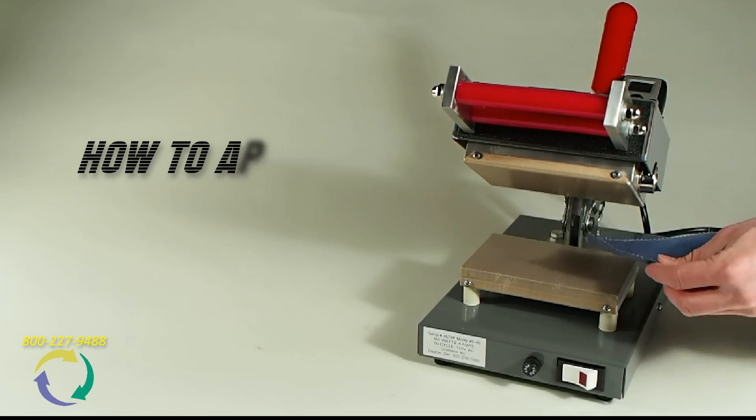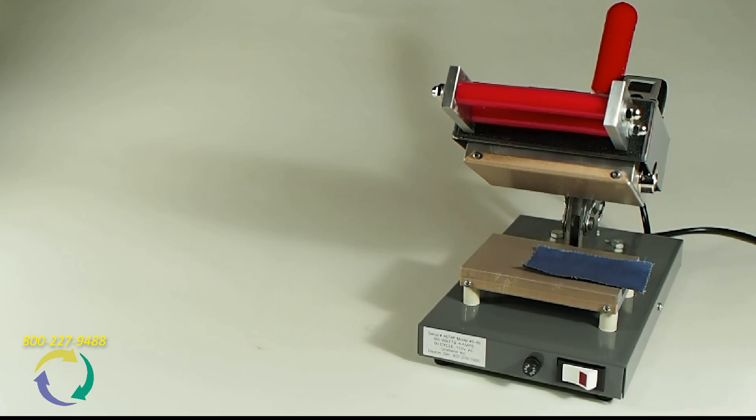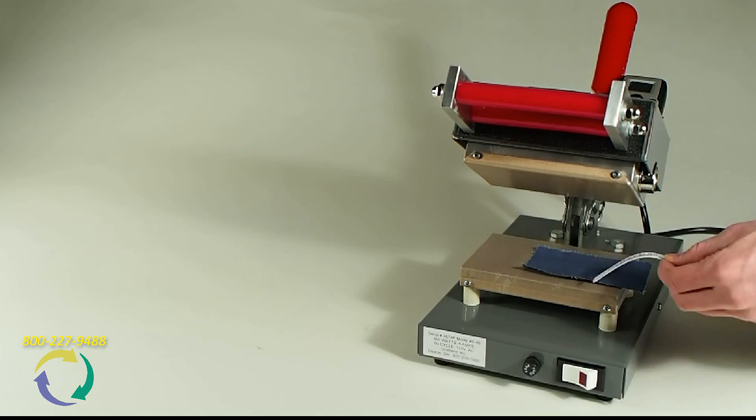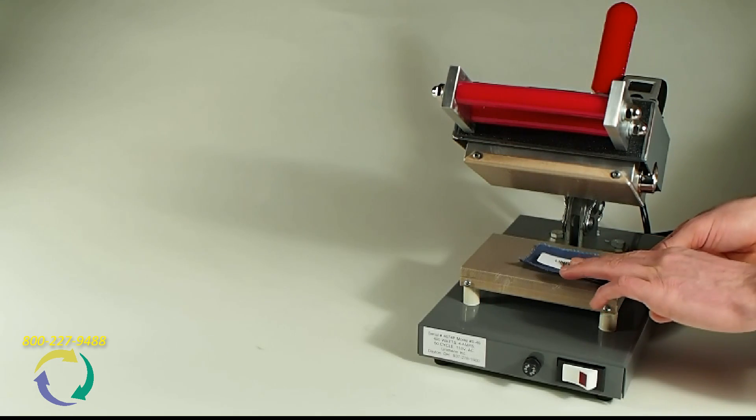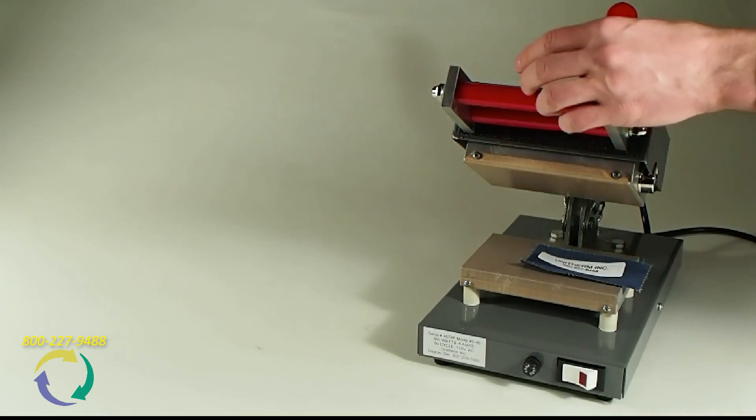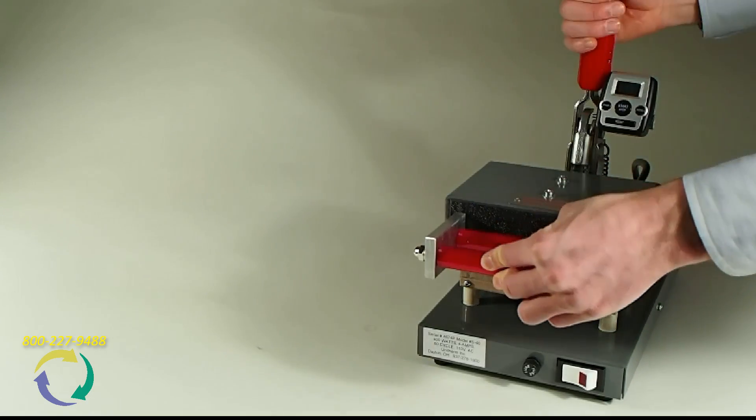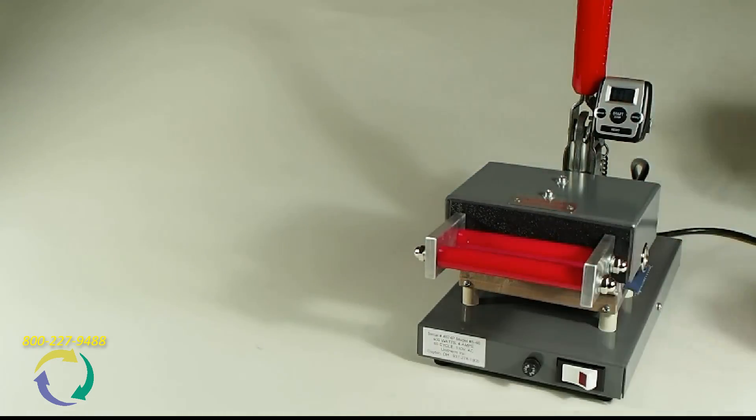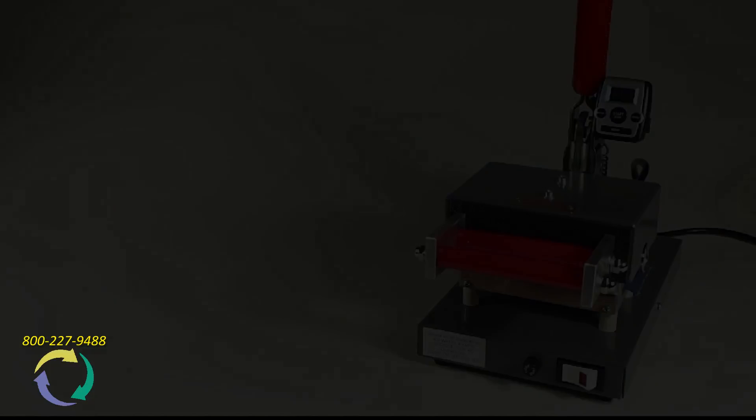When it reaches 400 degrees, place the garment on the bottom table. Then place the garment label on top. Pull down the top platen and lock it in place with the rear handle. Then press the start button on the timer.